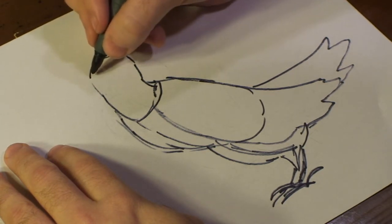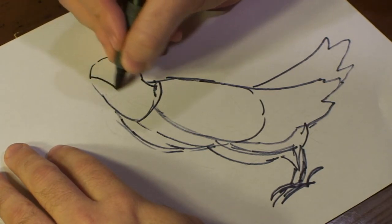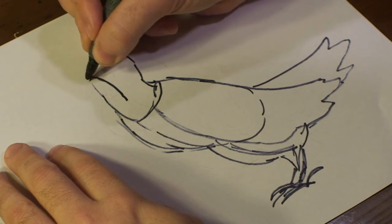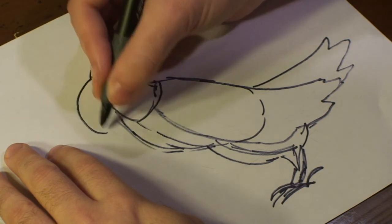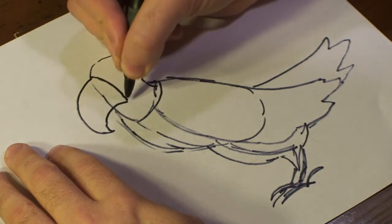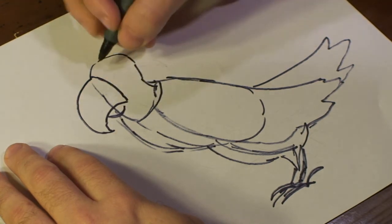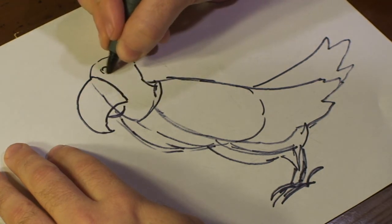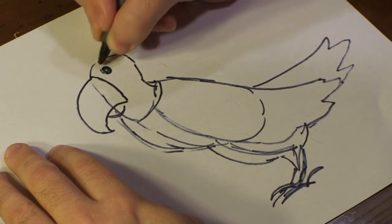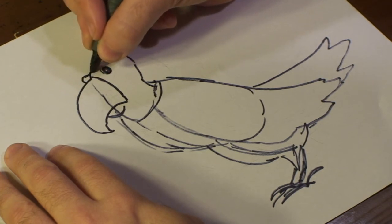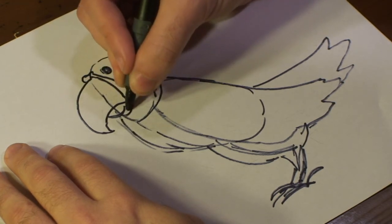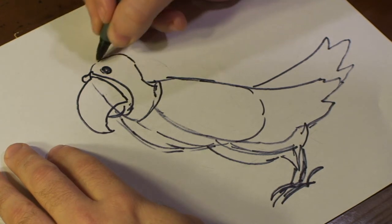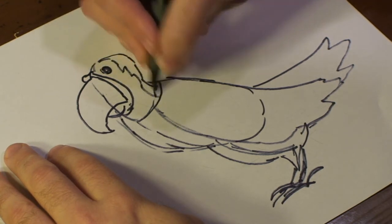Then I'm going to draw out his beak. With a parrot's beak, the top part is a little bit bigger than the bottom part. So we've got an eye, and we just add a bit of that.